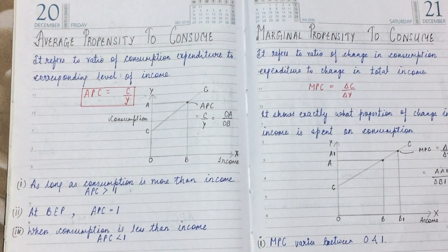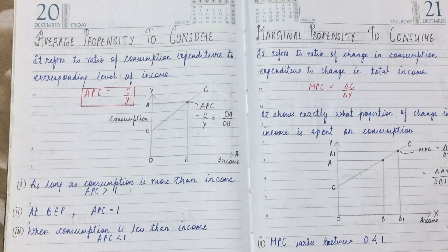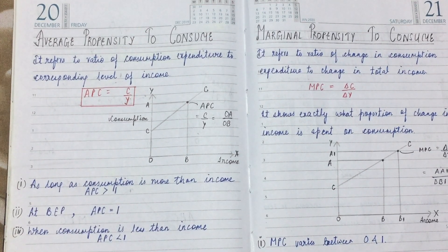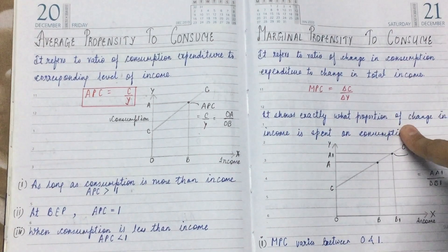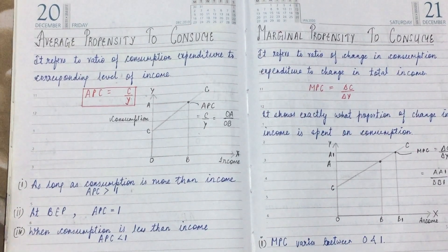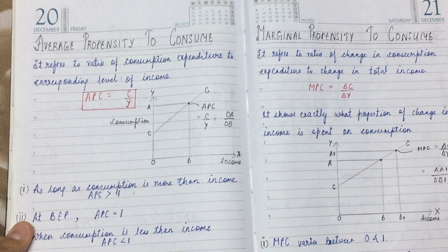Hello guys, welcome to my channel 'Commerce and Economics with Ayushi Sharma.' Today we'll be discussing propensity to consume — the consumption function — which is divided into two parts: the first part is Average Propensity to Consume, and the second part is Marginal Propensity to Consume. We will cover both parts in this video, so don't forget to subscribe if you're new. Let's begin.